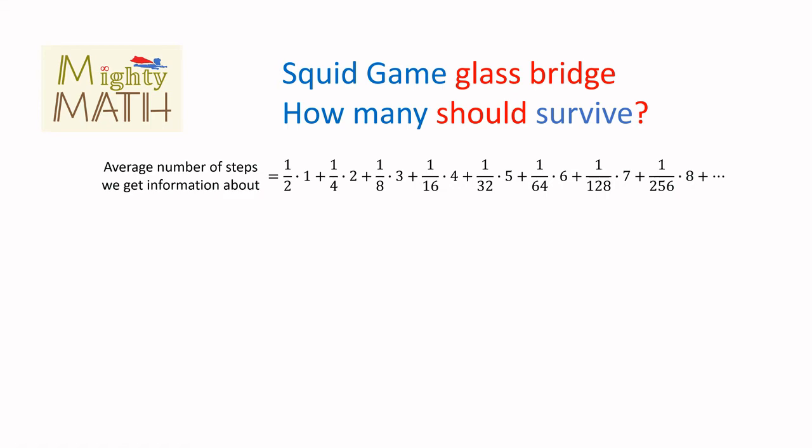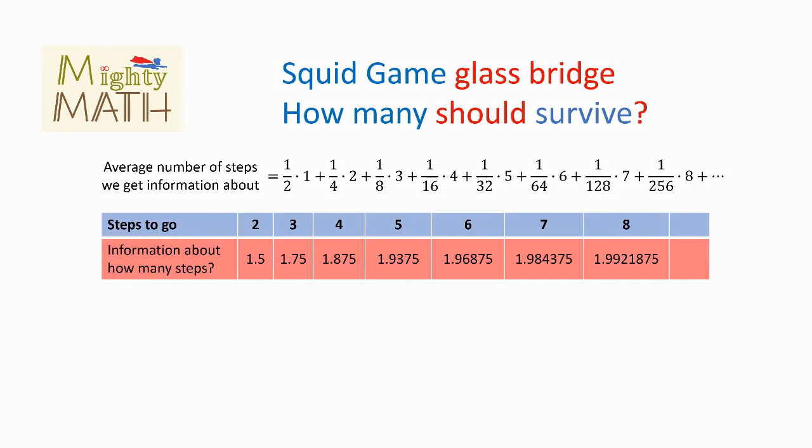So we've worked out a general way to calculate the average number of steps we get information about from a player. Some of them would lose on their first step. Others leave the rest of the players information about five, six, maybe even more steps. The more steps to go, the closer to two. But even with only four steps to go, we are very close to two. So we can conclude that in average, every player gives information to the others about almost exactly two steps.